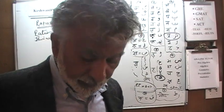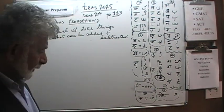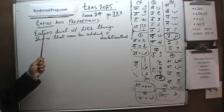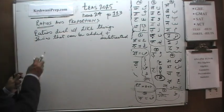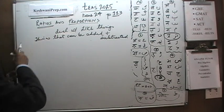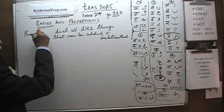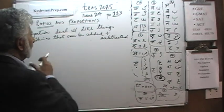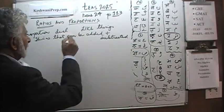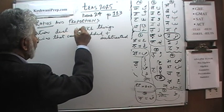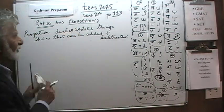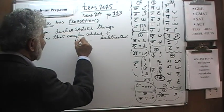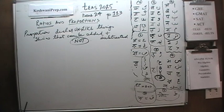Proportions, on the other hand — not ratios — deal with unlike things. Things that cannot be added or subtracted.